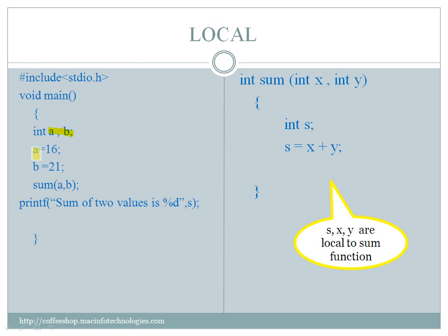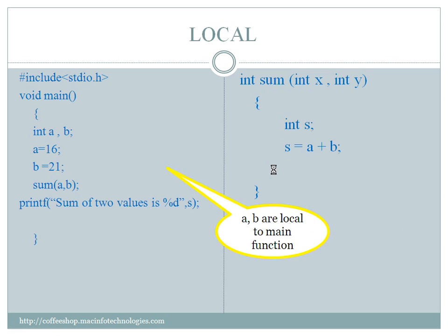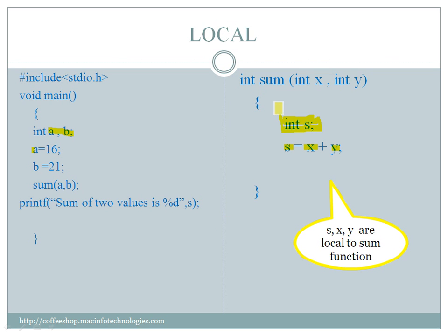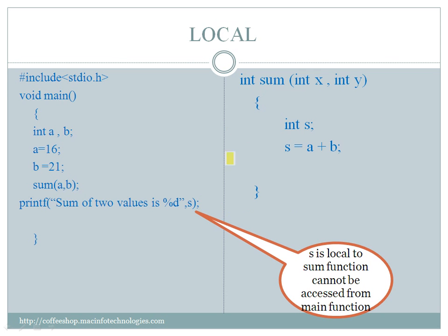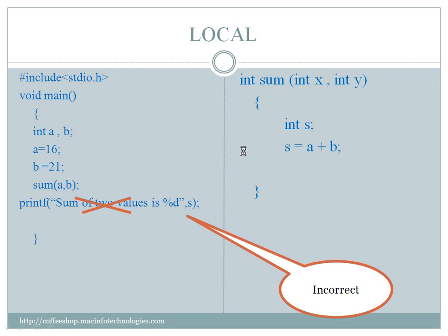For local variables, we have declared variables 'a' and 'b' in the main function. In the sum function, we have declared variables x, y, and s — these belong to the sum function. You cannot access x, y, and s in the main function, and a and b are local to main. If you try to access 's' from the main function, you will get an error.